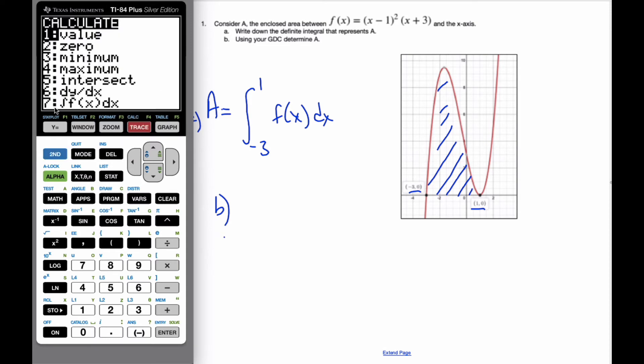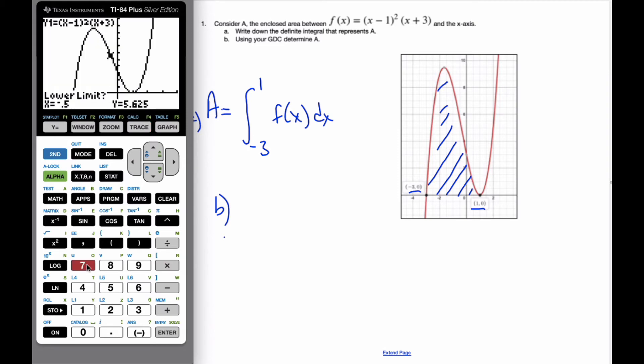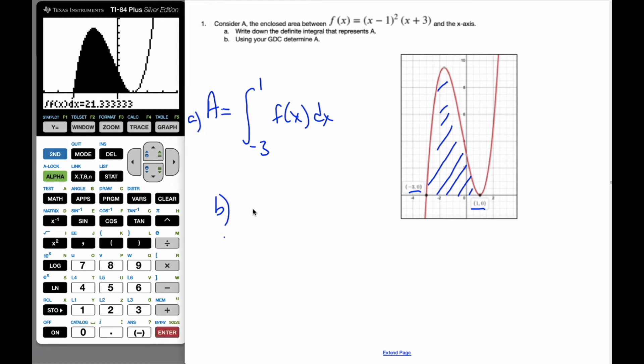I'm going to do number 7, which is the integral. My lower limit is negative 3. My upper limit is 1. And then I know that A is equal to 21.3, which is the area underneath there.